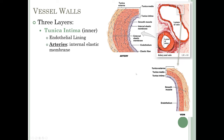The tunica intima contains the endothelial lining — simple squamous cells that line all blood vessels and even the inside of the heart — shown as the dark purple portion. There are also some connective tissues underneath, shown in light purple. Arteries have an internal elastic membrane underneath their tunica intima, shown by the squiggly red line. Veins do not have that internal elastic membrane.